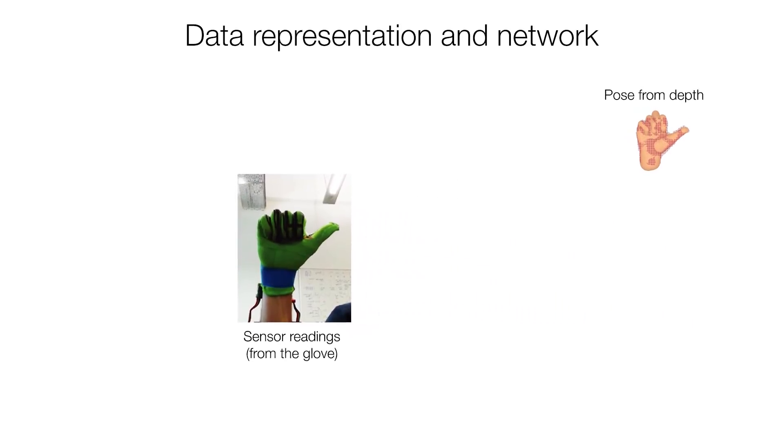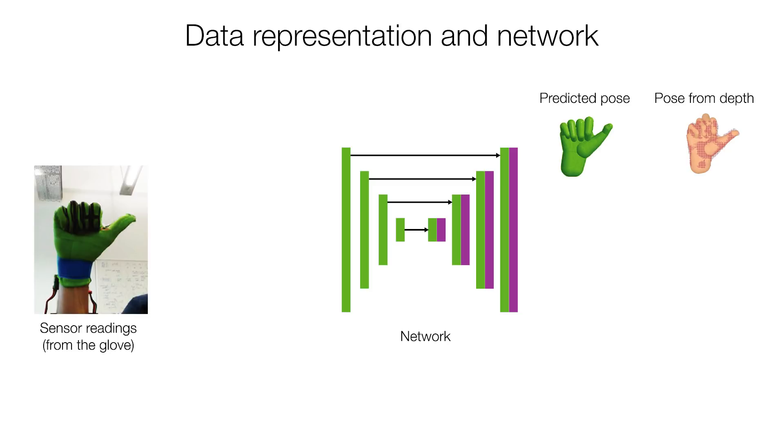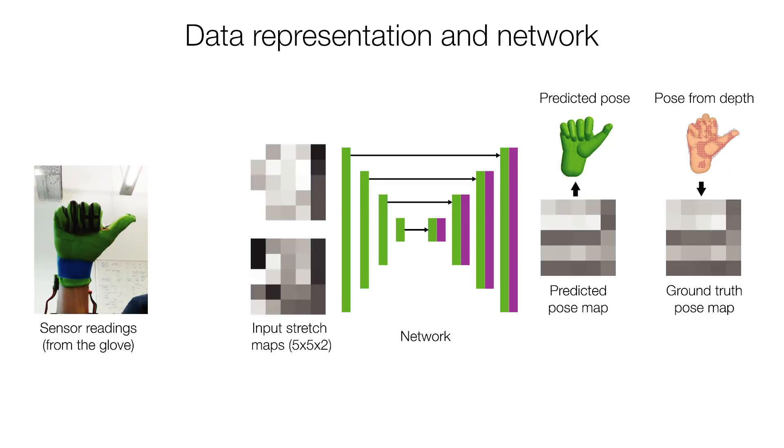This allows us to employ a data-driven approach to model the mapping from the stretch sensors to the hand pose. We propose a deep network architecture that exploits the spatial layout of the sensor array and the hand itself. A minimal per user calibration is performed on the fly using only the glove.